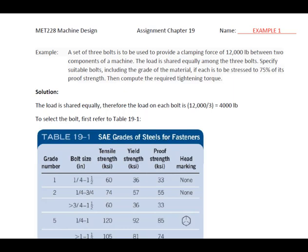The first step is, the load is shared equally, so we need to find out what the load is on each one of the bolts. In this case, it's 4,000 pounds, which is 12,000 divided by 3.